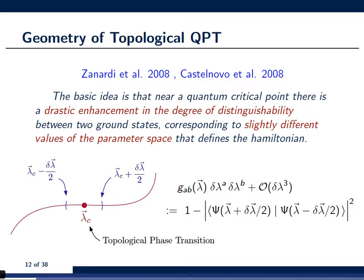Then you look a little bit to the left and a little bit to the right by some very small amount delta vector of lambda half. And you compare the corresponding ground states that correspond to these slightly different values in parameter space. And what you will notice from a qualitative point of view is that there's a drastic enhancement in the degree of distinguishability of these two ground states as you go through the topological phase transition. And this qualitative picture can be made precise or quantitative by using the Fubini-study metric. In fact, the Fubini-study metric is tailor-made for capturing this very phenomenon.